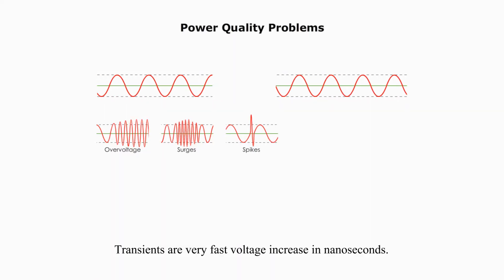Transients are very fast, high voltage increase in terms of nanoseconds.